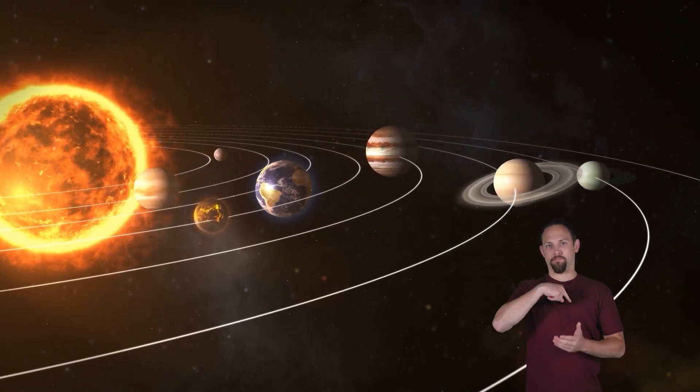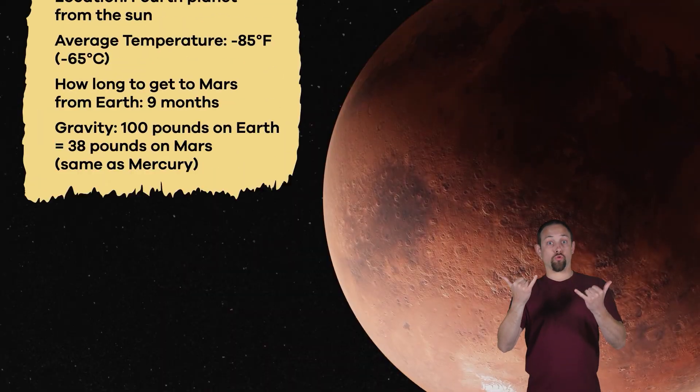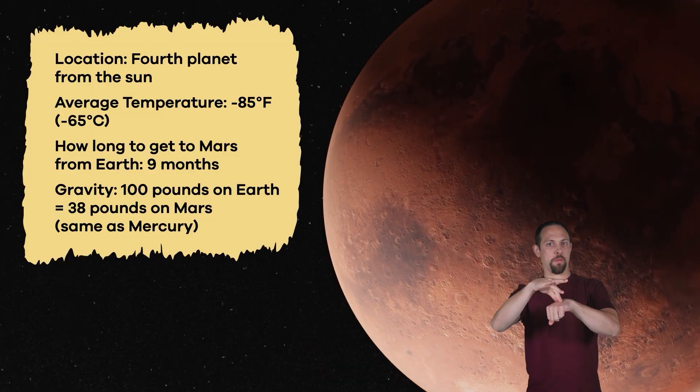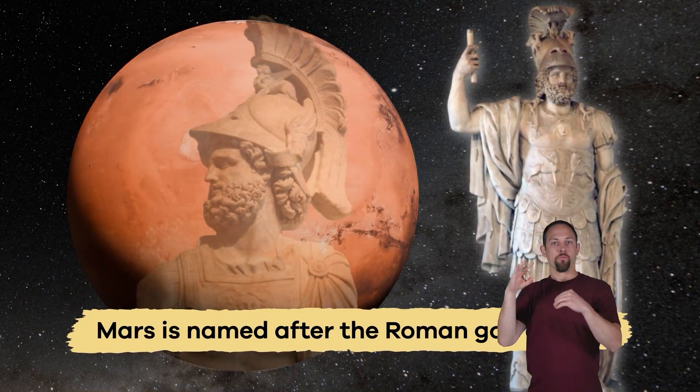Mars. We are learning about all of the planets in our solar system. Today, we have our sights set on Mars, the fourth planet from the Sun. Often called the Red Planet, Mars is named after the Roman god of war.